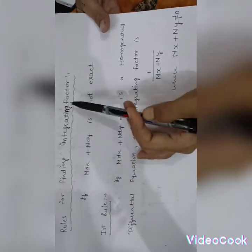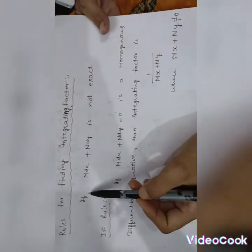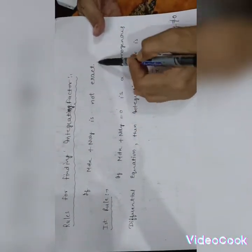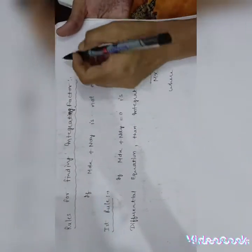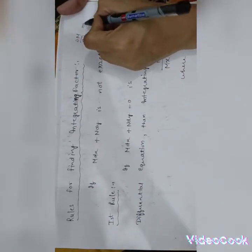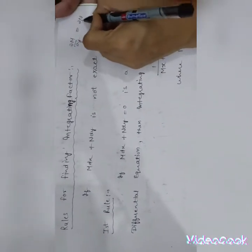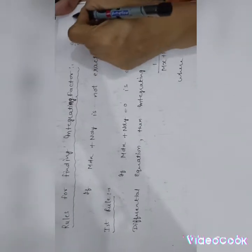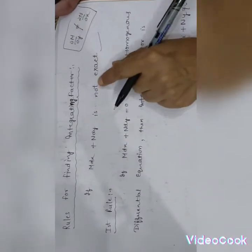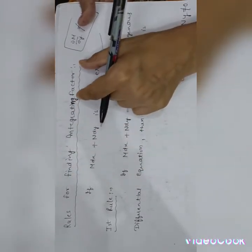Rules for finding the integrating factor: if M dx plus N dy is not exact — that is, if ∂M/∂y is not equal to ∂N/∂x — then the differential equation is not exact, and we need to find an integrating factor.